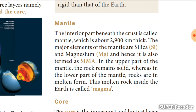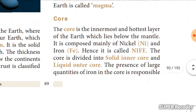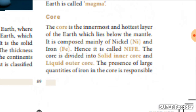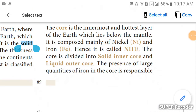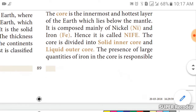In the upper part of the mantle the rock remains solid, but in the lower part the rocks are in molten form. Because of the heat and pressure, this becomes magma. The earth's rock inside melts and becomes magma. Magma is a red fiery liquid. The core is the innermost and hottest layer of the earth, which lies below the mantle.